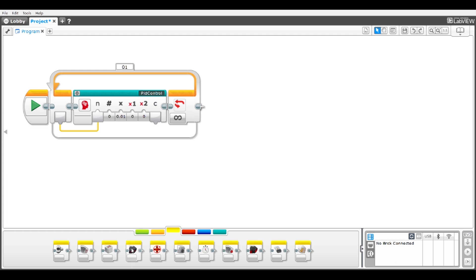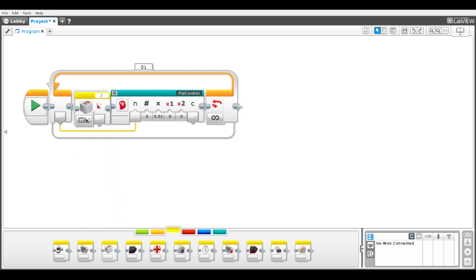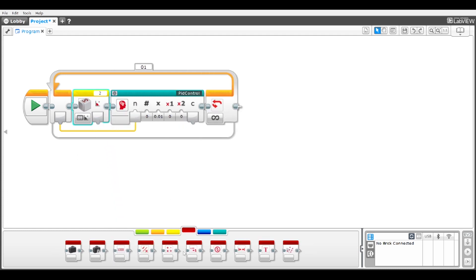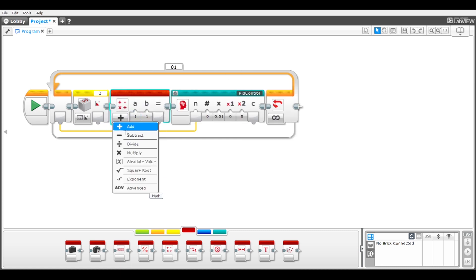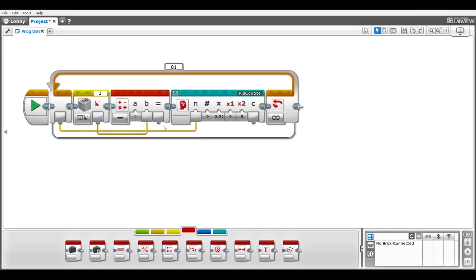Each time in the loop, the error is calculated. The error here is the difference between the original robot angle, zero, and the current robot angle, measured with the gyro sensor. PID Control tries to make the error go to zero.